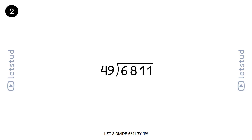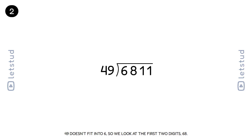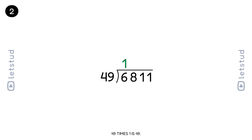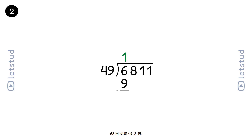Let's divide 6811 by 49. We start with the digit 6. 49 doesn't fit into 6, so we look at the first two digits, 68. 49 times 1 is 49. 68 minus 49 is 19.